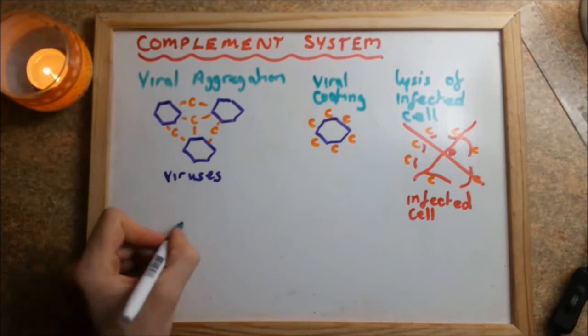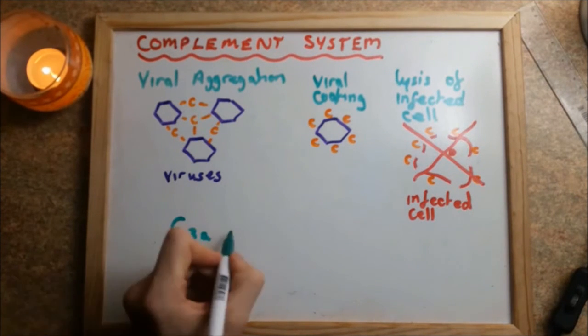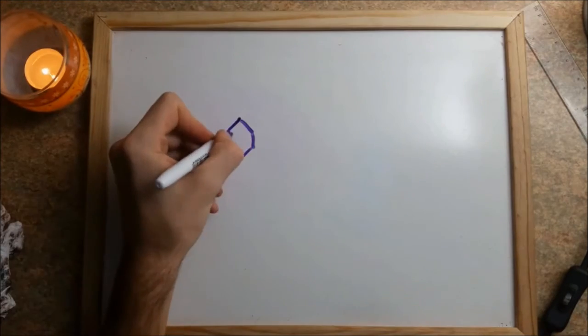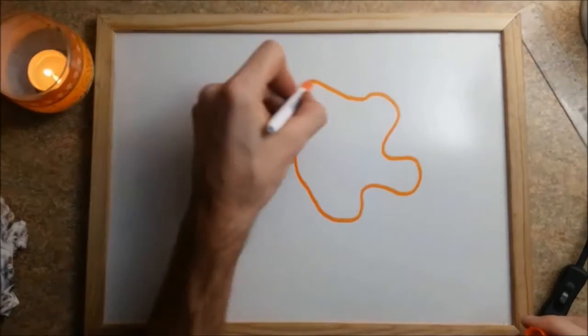Finally, C3a formed via the classical pathway and C5a cooperate to initiate the inflammatory response. And that's how the innate immune system deals with viruses.